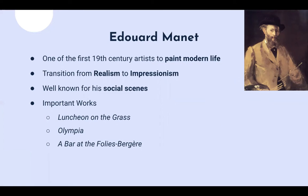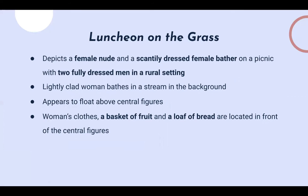He's also known for his social scenes. Some important works I'm going to talk about are Luncheon on the Grass, Olympia, and A Bar at the Folies-Bergère. Luncheon on the Grass depicts a scantily-dressed female bather and a female nude on a picnic, with two dressed men in a rural setting. It was originally titled Le Bain, meaning 'the bath.' There's one woman bathing in a stream in the background who seems to float above the central figures — the woman staring at the viewer and the two fully dressed men.